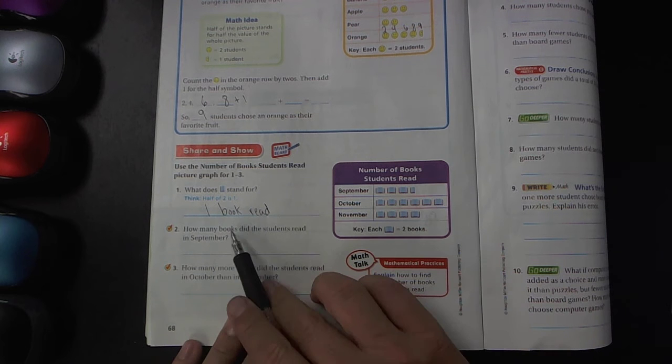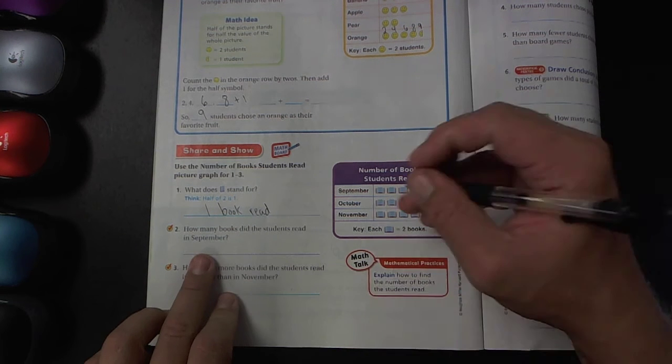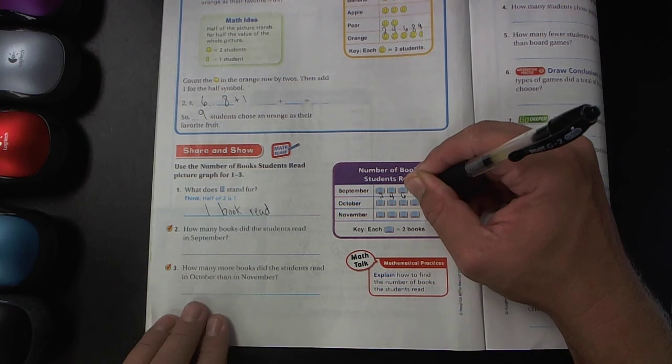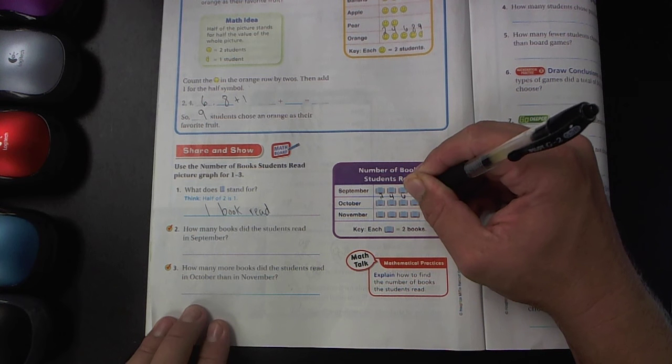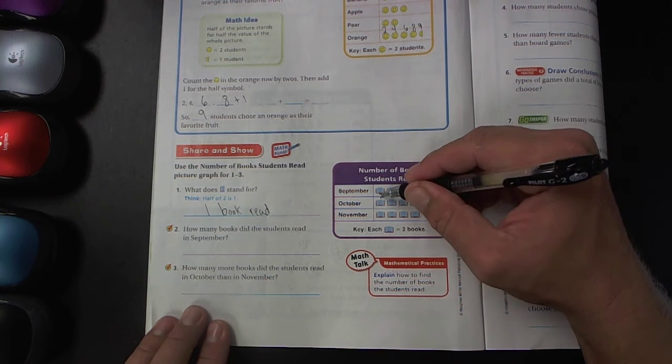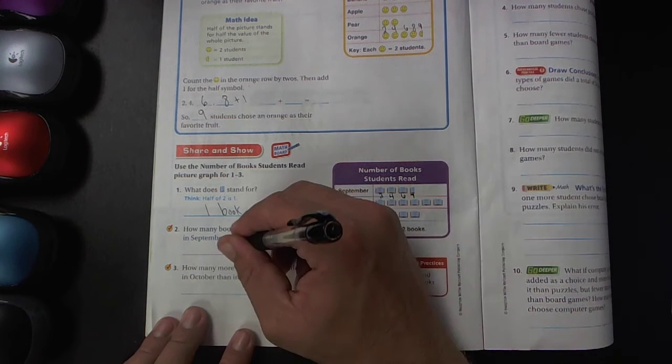Look at number two. How many books did the students read in September? You can see here, two, four, six, and this little half of a book is worth one. So it's going to be seven all day. Two, four, six, plus one is seven.